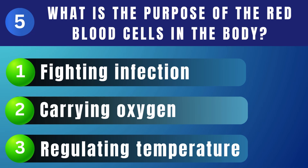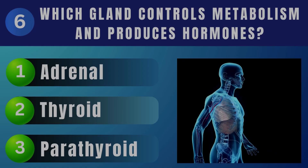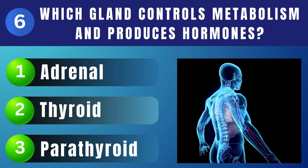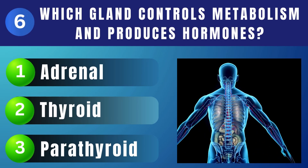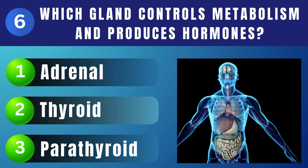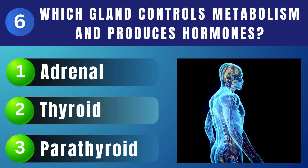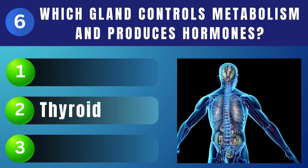What is the purpose of the red blood cells in the body? Carrying oxygen. Which gland controls metabolism and produces hormones? Thyroid gland.